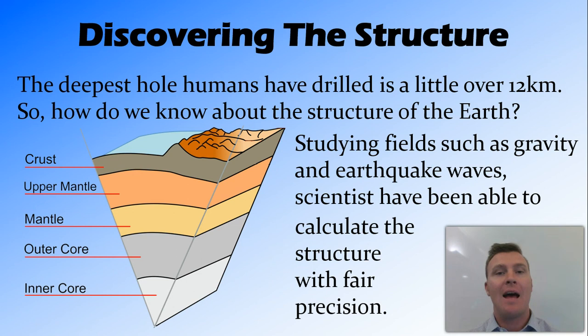But you're probably asking, how do we know that we've got all these different layers if we haven't seen them? We have drilled a hole in the crust, and it got down to about 12 kilometers deep. They were aiming for 15, but didn't quite get there. So that barely scratches the surface of the crust. So how do we know that all these things are down here?